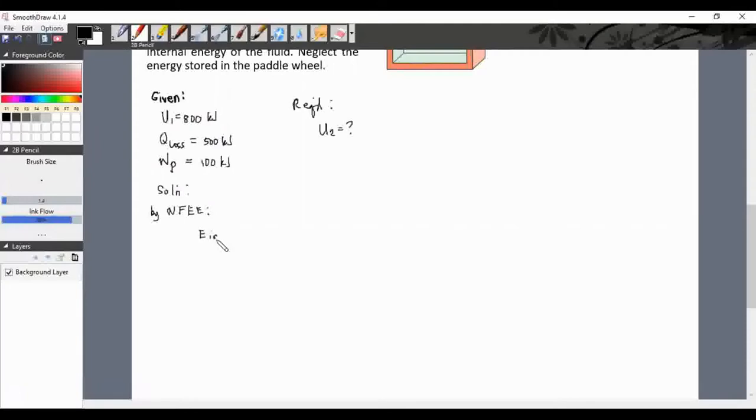By non-flow energy equation, we have energy in minus energy out equals change in energy. So what are the requirements on the left side of the equation? We have heat: Q_in minus Q_out, plus work external in minus work external out. There's no flow work since this is a closed system.